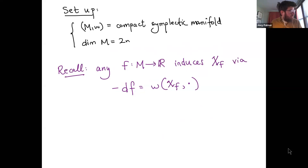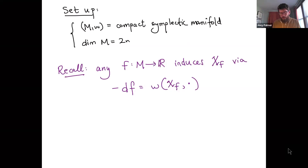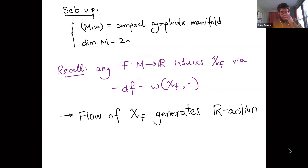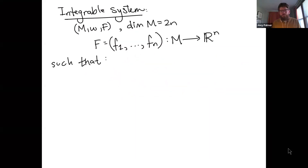So M omega for today will always be a compact, connected symplectic manifold of dimension 2n. If you're given a real function on a symplectic manifold, this induces the Hamiltonian vector field, and we can take the flow of this Hamiltonian vector field to get our action. This is the basis of the idea of integrable systems — the relationship between group actions and functions.